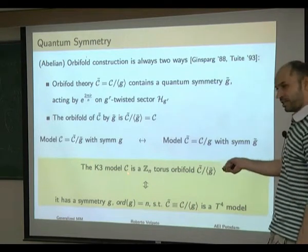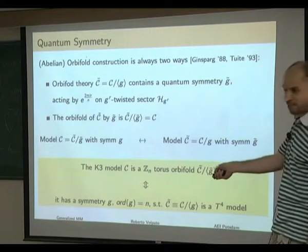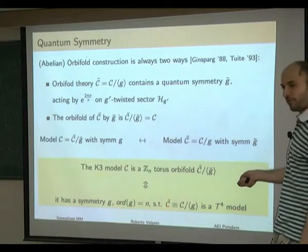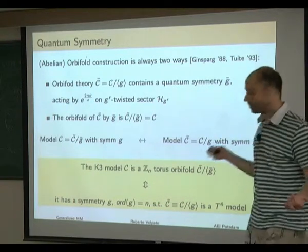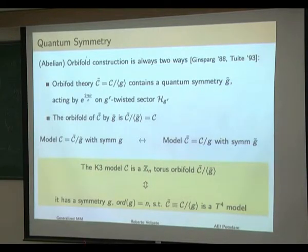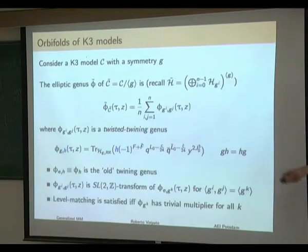This gives a criterion for characterizing torus orbifolds: a K3 model C is a torus orbifold if and only if it has a symmetry of order n such that the orbifold is consistent and yields a T4 model.